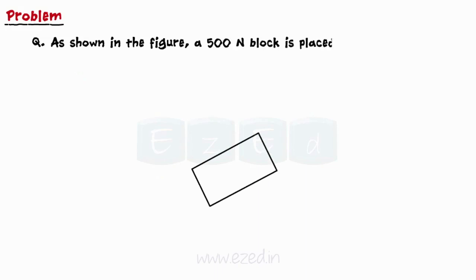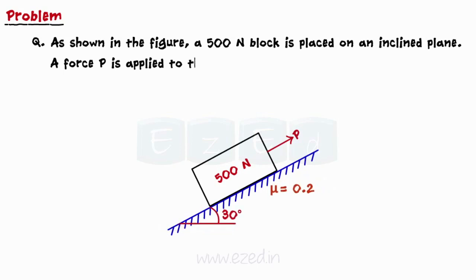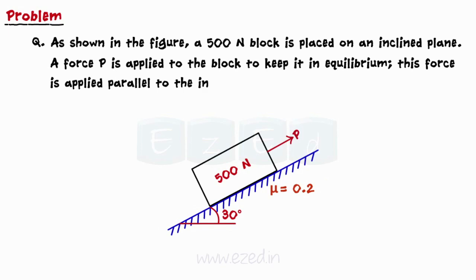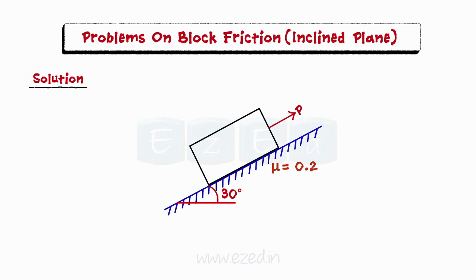Consider the following problem. As shown in the figure, a 500 N block is placed on an inclined plane. A force P is applied to the block to keep it in equilibrium, applied parallel to the inclined plane. Determine the range of values of applied force P in which the block will be in equilibrium. This is a simple case of block friction on an inclined surface.